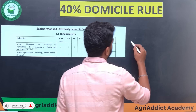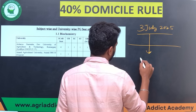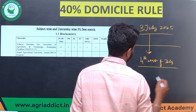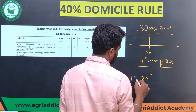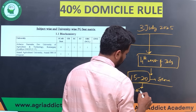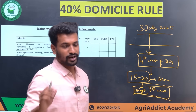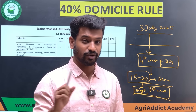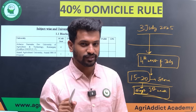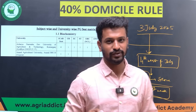Regarding the counseling timeline: the exam was completed on July 3rd. The answer key will most likely come in the last week of July. After the answer key release, expect the rank card or score card in another 15 to 20 days. Counseling may start in the first week of September. Please be prepared with all the required documents for counseling — I will also explain which documents are needed in the playlist. Even if you get a good rank, missing documents will cause problems.